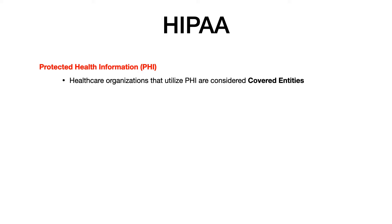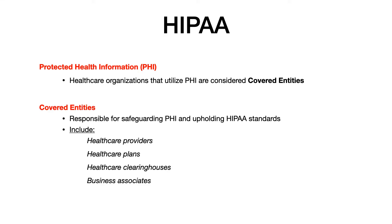Healthcare organizations that utilize protected health information are considered covered entities. Any healthcare organization that uses PHI — which includes hospitals, clinics, emergency rooms, essentially any healthcare facility — is a covered entity. Covered entities are responsible for safeguarding PHI and upholding HIPAA standards.